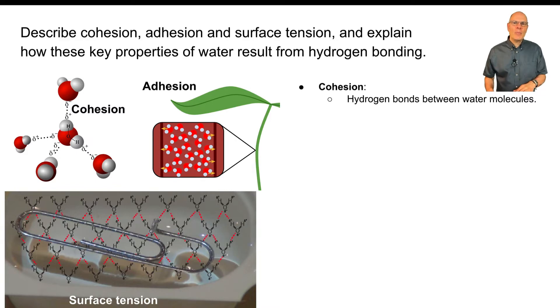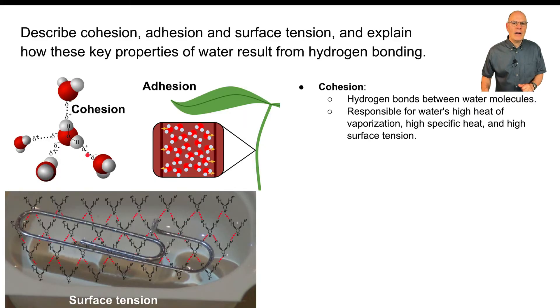Cohesion, that's hydrogen bonds between water molecules. So this is cohesion right here. And it's responsible for many of water's very peculiar properties. It's a very small molecule, but it has a very high heat of vaporization. It takes a lot of energy to get water to evaporate. A high specific heat, it can hold a lot of heat, and it has high surface tension, which we'll talk about below.